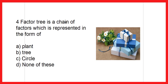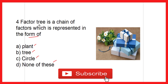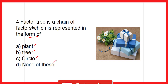A factor tree is a chain of factors which is represented in the form of a plant, tree, circle, or none of these. The answer is that a factor tree is represented in the form of a tree, so option B is the correct answer.